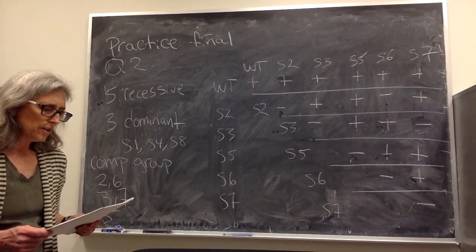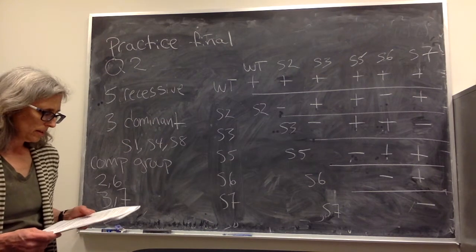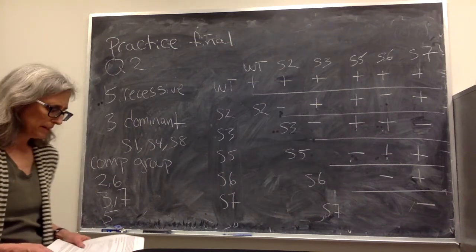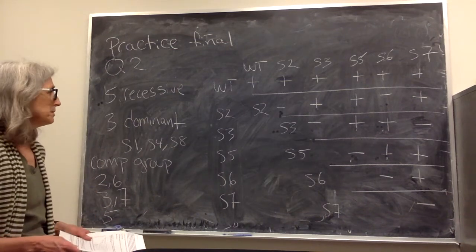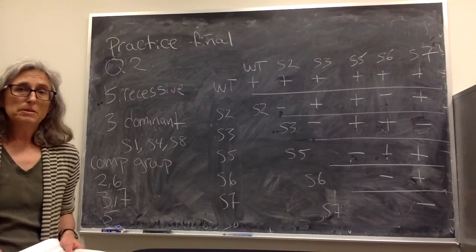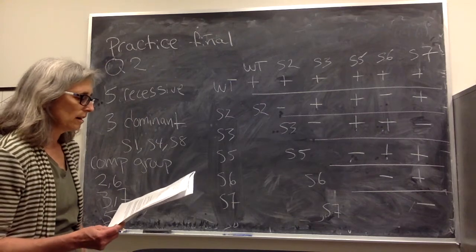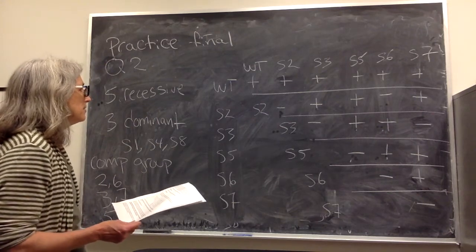And in this question we want to know what are the minimum and maximum number of genes that can be defined by these mutations. So for simplicity's sake I took out the dominant mutations from the table to make it a little less complex. There were a lot of different crosses involved.